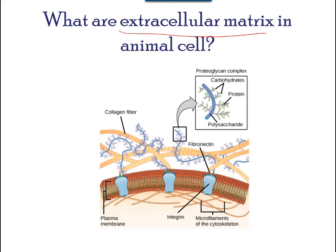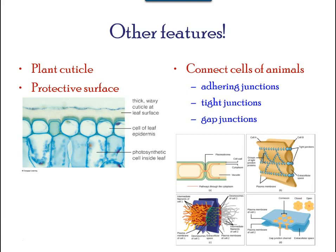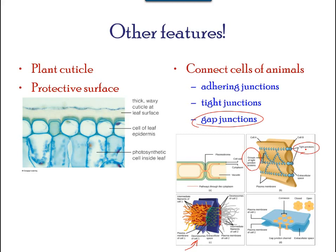Tight junctions form a watertight seal between two adjacent animal cells. Also found only in animal cells are desmosomes, which act like spot welds between adjacent epithelial cells. Gap junctions are found in animal cells and are similar to plasmodesmata in plant cells, in that there are channels between adjacent cells that allow for the transport of ions, nutrients, and other substances. However, gap junctions and plasmodesmata differ structurally. This concludes our second lecture of this series.